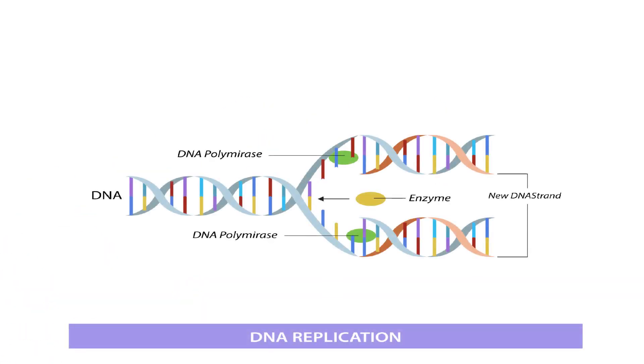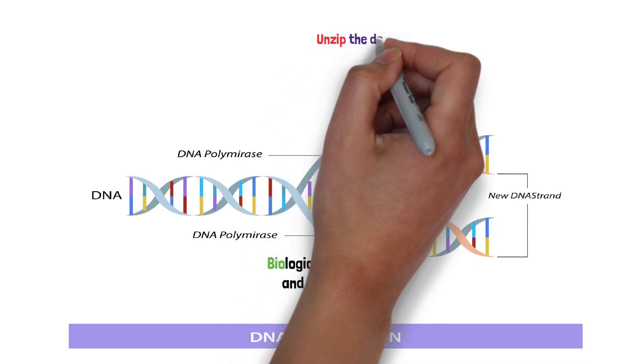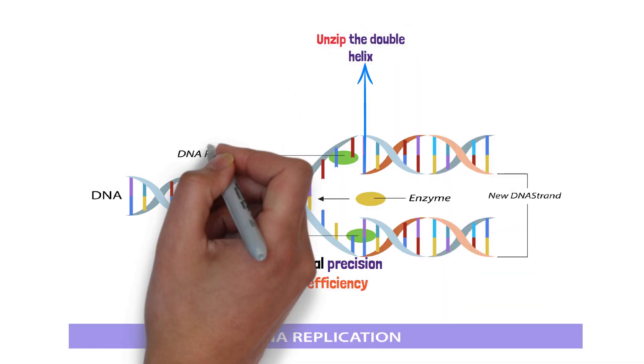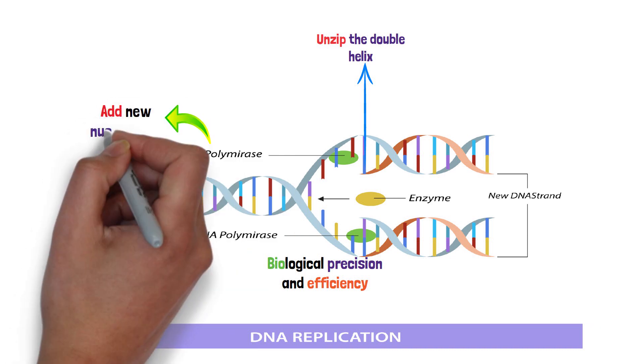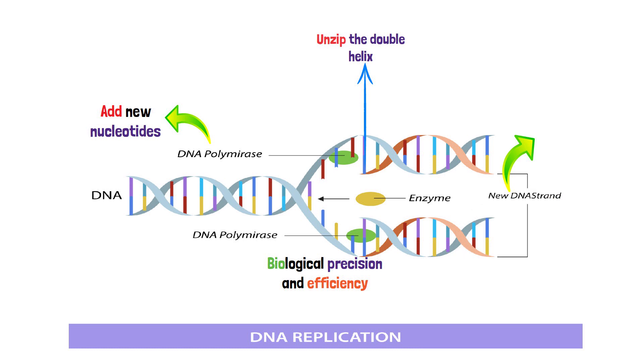DNA replication is a marvel of biological precision and efficiency. Enzymes like DNA helicase unzip the double helix, allowing DNA polymerase to add new nucleotides to each strand. This process ensures that each new cell inherits an exact copy of the DNA, a necessity for life to flourish and evolve.